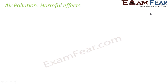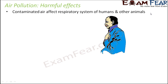Let us quickly look at the harmful effects of air pollution. Contaminated air can affect the respiratory system of humans and other animals, and as a result living organisms might suffer from respiratory disorders — that is, they might have difficulty in breathing. Because respiration is very important: oxygen gets inside your body through respiration and then helps in conversion of food to energy. So that process will get impacted and as a result it might affect the survival of living organisms as a whole.